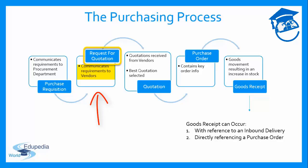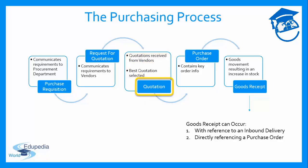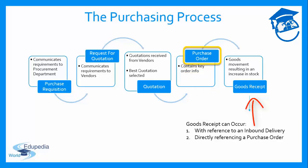When vendors receive the RFQ they respond by sending a quotation to the purchasing organization. An organization typically receives a large number of quotations, and the SAP system helps select the best one. With reference to the winning quotation, the organization creates a purchase order, which contains all key information pertaining to the order and gives the basis for performing the goods receipt.